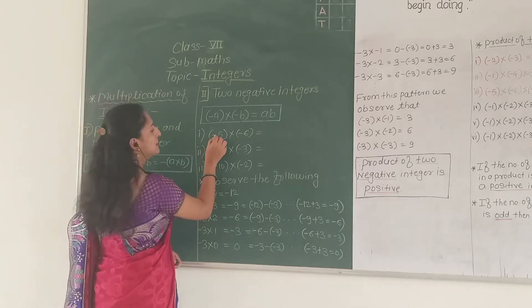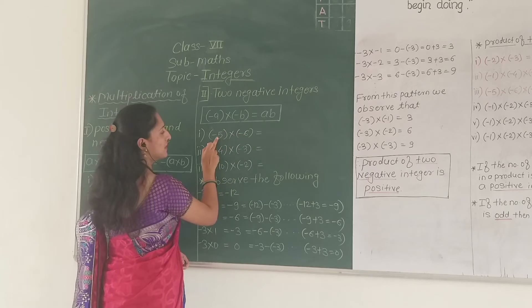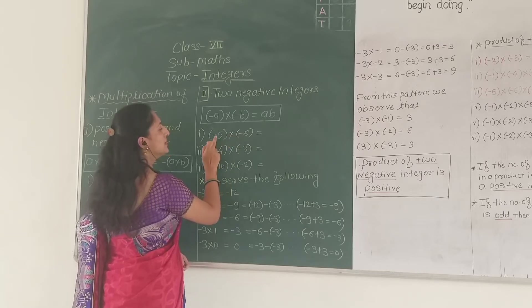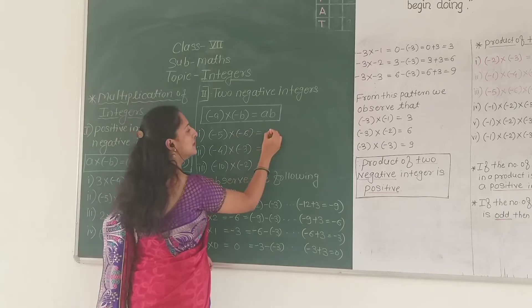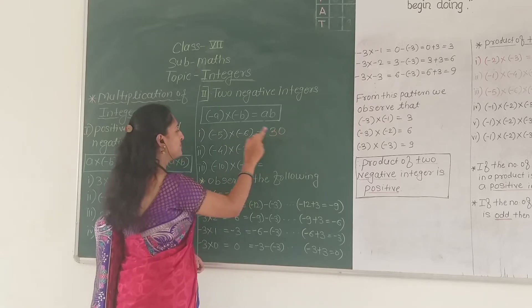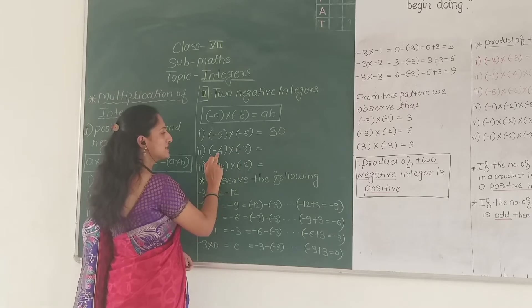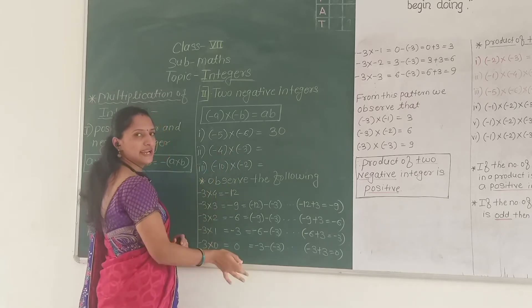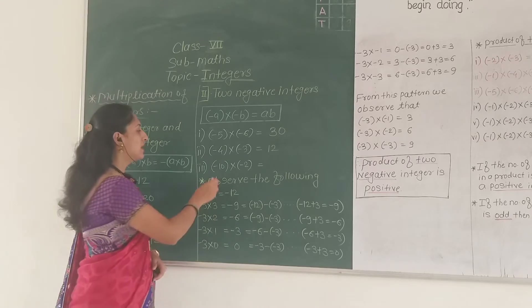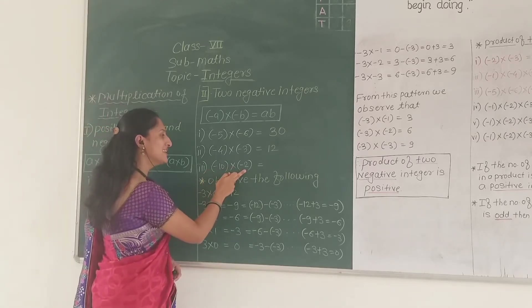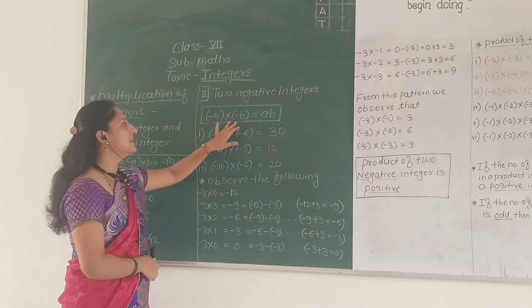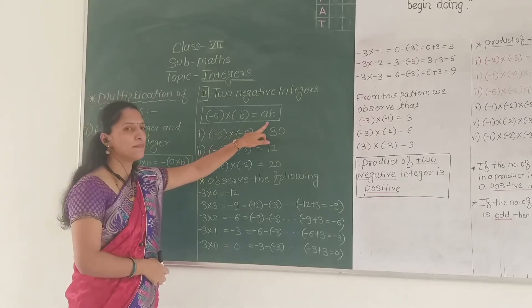Look at some examples. Negative 5 into negative 6: there are two integers, five and six, and both are negative. So the product of these two integers is positive 30. Negative into negative is positive. Now, negative 4 into negative 3: both are negative, so their product is positive — 4 into 3 is 12. Again, negative 10 into negative 2 is 20. So remember students: both the integers are negative, their product is positive.